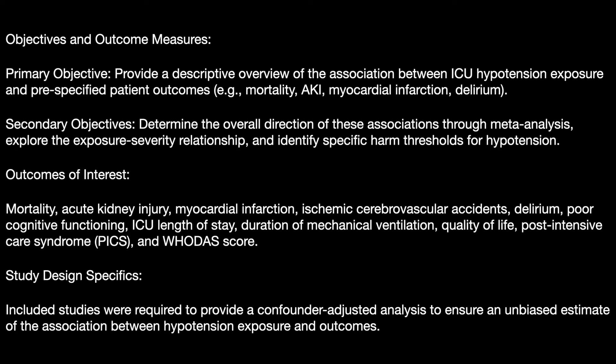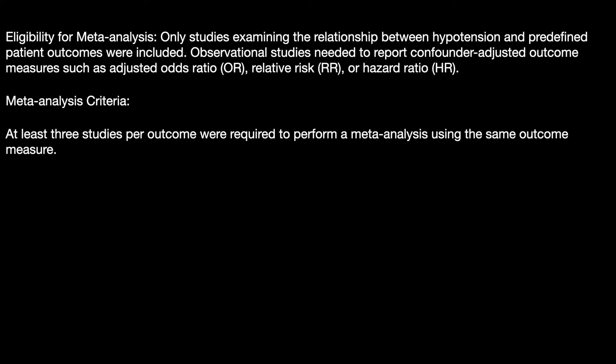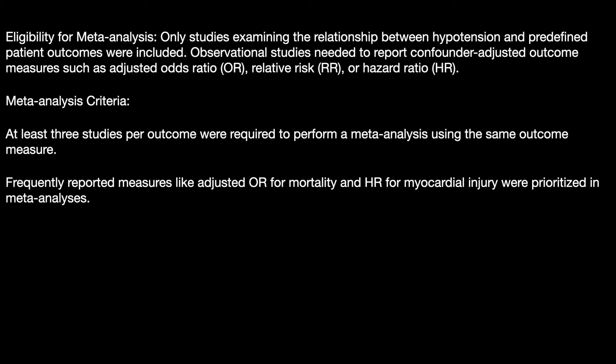Study design specifics required confounder-adjusted analysis to ensure an unbiased estimate of the association between hypotension and outcomes. For meta-analysis eligibility, only studies reporting confounding-adjusted outcomes with adjusted odds ratio, relative risk, or hazard ratio were included. At least three studies per outcome were required, and frequently reported measures such as adjusted odds ratio for mortality and hazard ratio for myocardial infarction were prioritized.